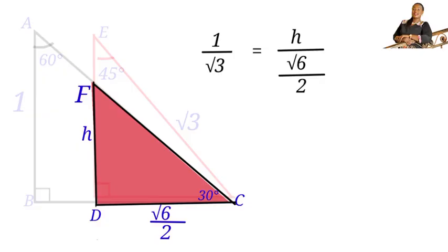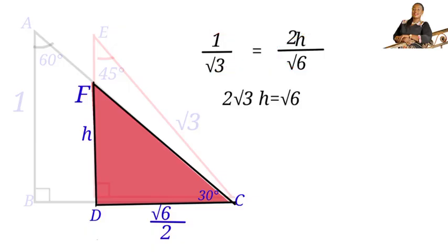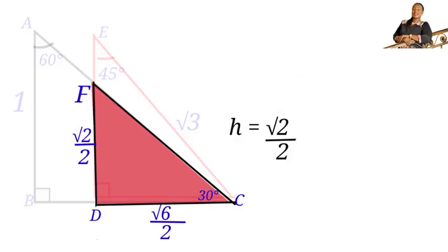Rearranging gives 1/√3 = 2H/√6. Cross-multiplying yields 2√3·H = √6. Dividing both sides by 2√3 gives H = √6 / (2√3) = √2/2. So H, the height FD of triangle FDC, equals √2/2.